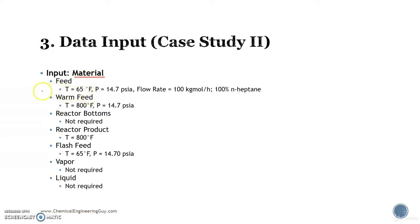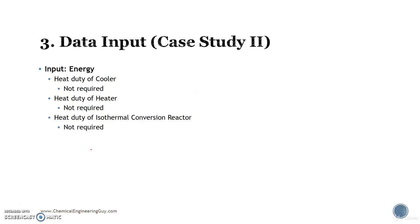We need a feed only given right here. We need to state the temperature and pressure for the warm feed. No need to state reactor bottoms - the temperature going out of the reactor must be stated. The flash feed must be stated as well. Finally, there is no requirement to add to any energy.